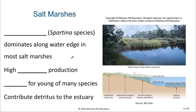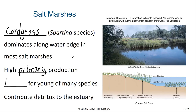Salt marshes are a common type of estuary, with cordgrass making up a dominant species. They have high primary productivity and serve as a nursery for the young of many species. These salt marshes often contribute detritus both to the estuary and also to some of the neighboring intertidal regions outside of the estuary as well.